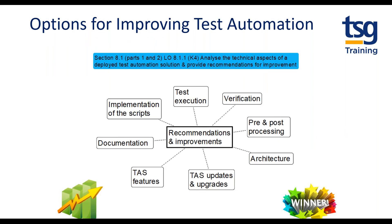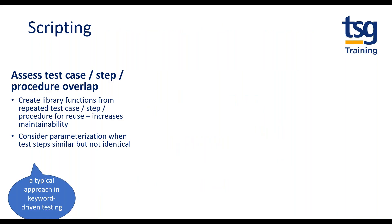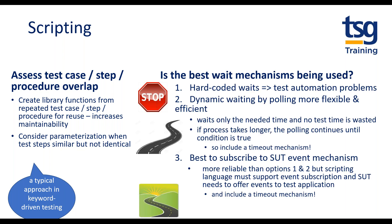The course closes by looking forward at options for improving test automation. The TAS needs ongoing maintenance to stay synchronized with the SUT. The scripting approach itself can be improved — recognizing overlap between scripts where test cases or steps are repeated, creating library functions to increase maintainability, and introducing parameterization where test steps are similar but not identical. Consider whether the best wait mechanism is being used — you want to avoid hard-coded waits. A more effective approach is to use dynamic waits, so no time is wasted; polling means that as soon as the condition is true, testing continues. But a timeout mechanism must be included.